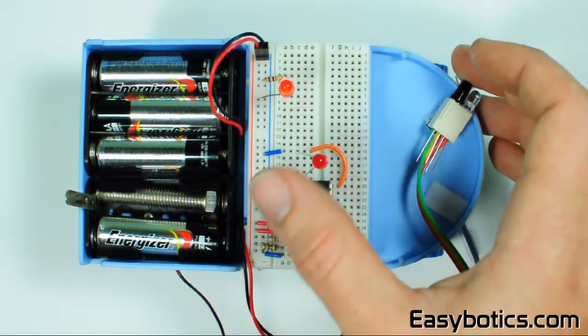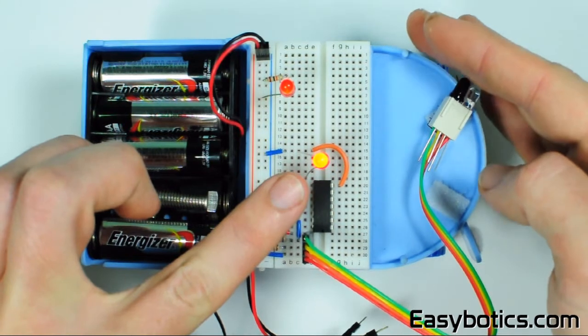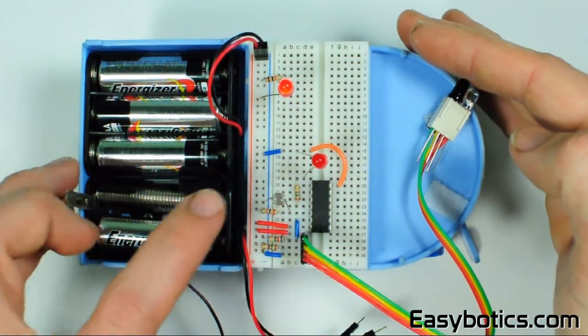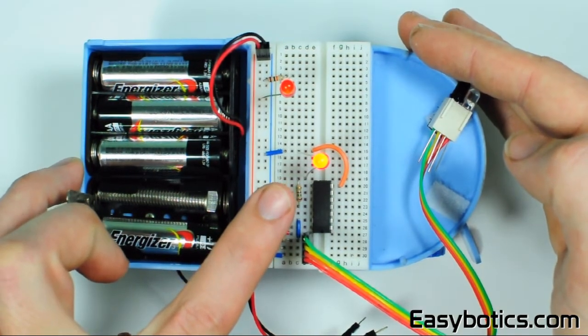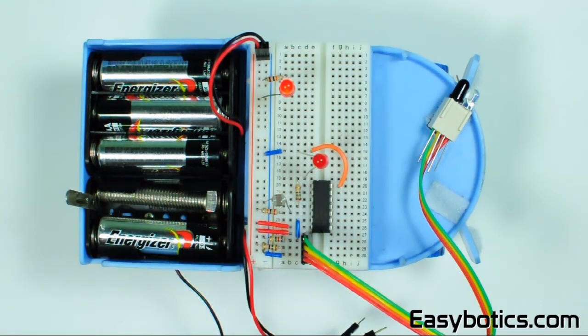You can cover just one and it doesn't do anything. Or you can do this, nothing happens until you do both. And that is the AND gate, the 4081.